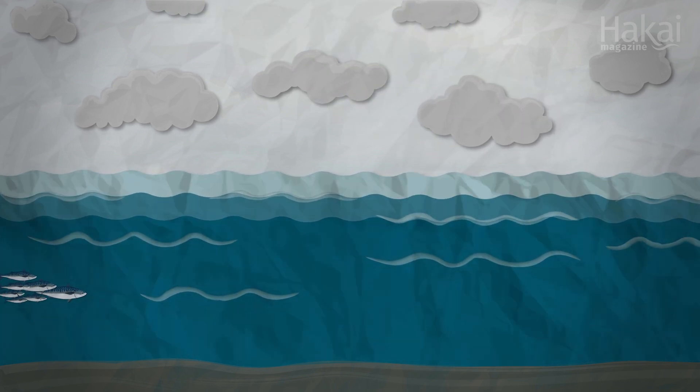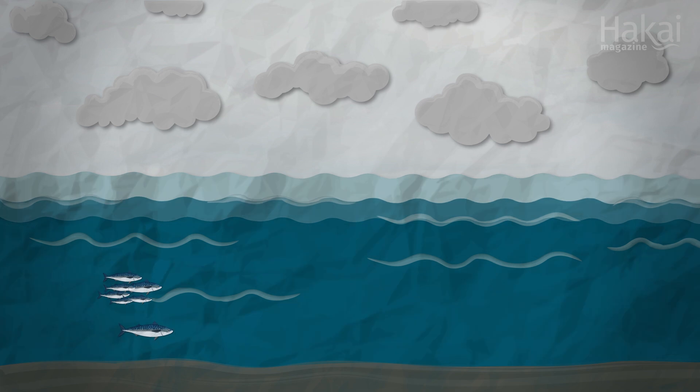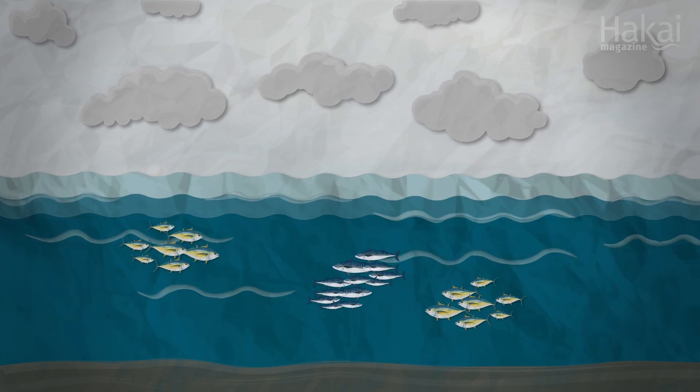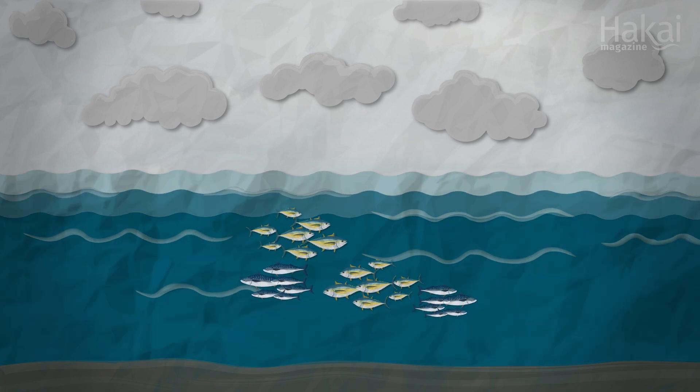So letting more big fish fall to the ocean floor when they die, as well as helping their numbers grow in the first place, could put a lot of carbon away by letting it fall.